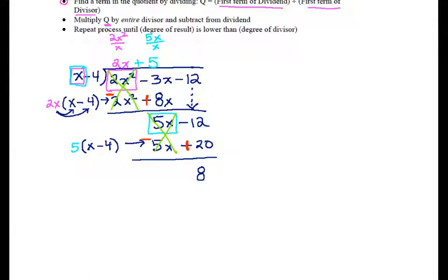All right, I can tell that I'm done with this, but let's be really specific about how we can tell. With our numbers, we kept going until we got a number that was smaller than the divisor.